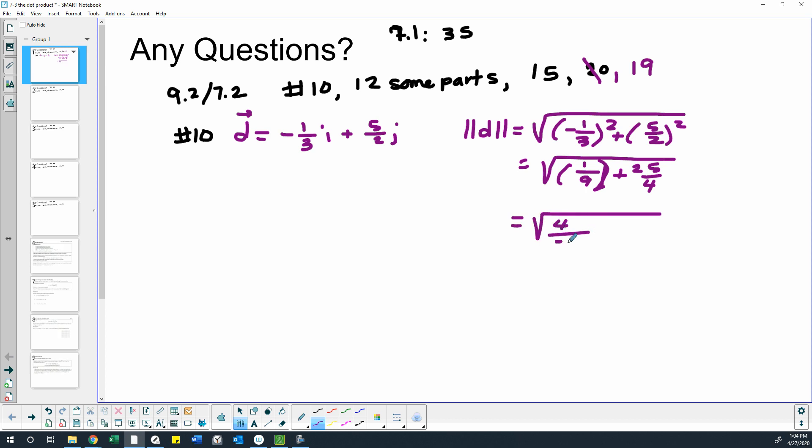So that would be four over 36, and then 25 times 9, that would be 45 times 5. So that gives us 225 over 36, which gives us 229 over 36.